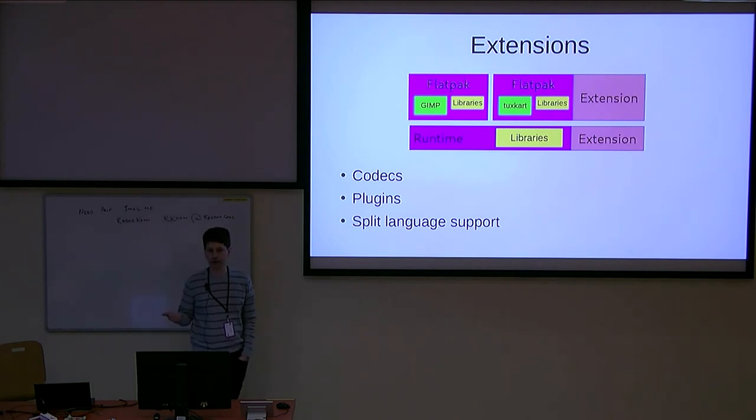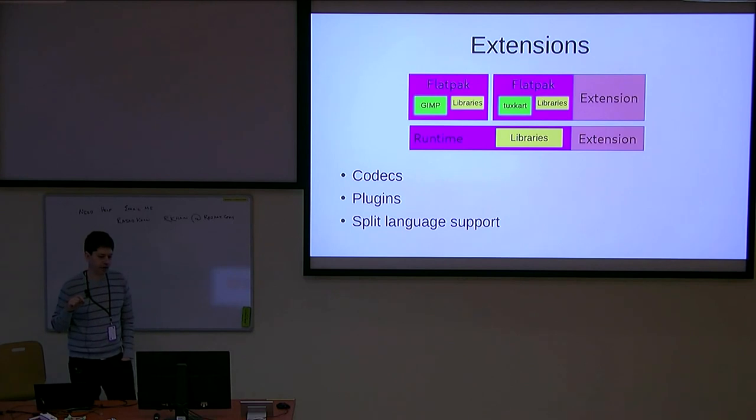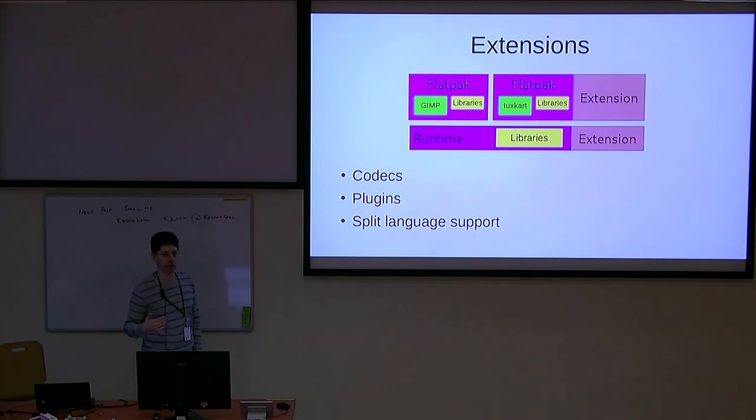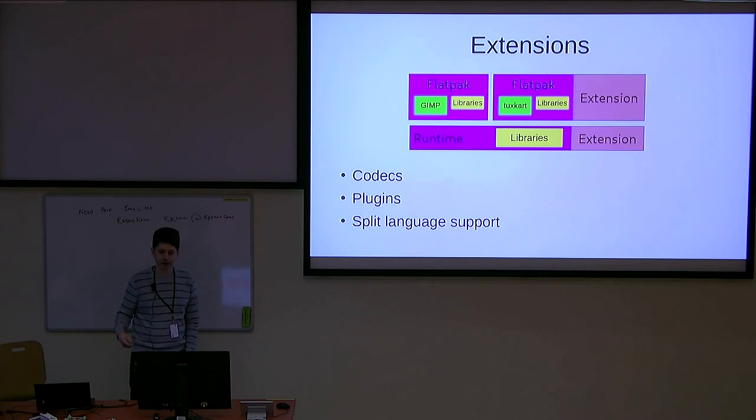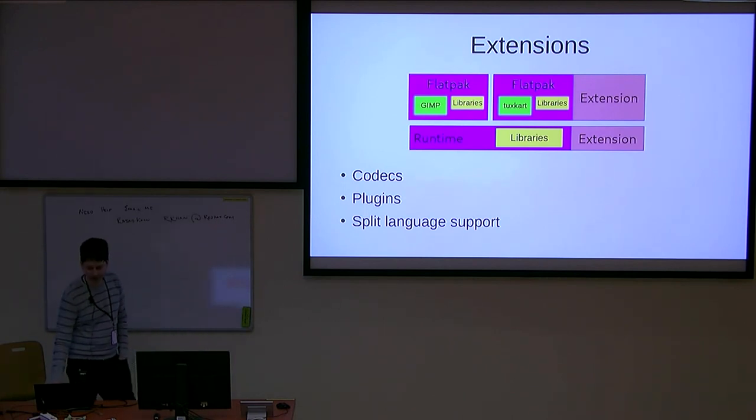It could be themes. Codecs is an important part. We add new media codecs, application plug-ins. Sometimes you want to split off the language support for an application to a separate extension. If you think about LibreOffice, including all the spelling dictionaries for every language makes for a very big Flatpak to download. If you download only what you need for your current language, makes it a much smaller download. We don't currently have support for building those within the Fedora container build system, but that's something we can tackle in the future to really make the story complete.